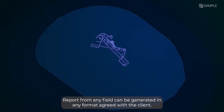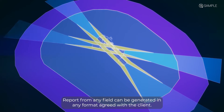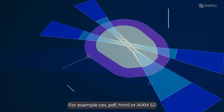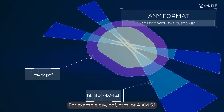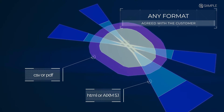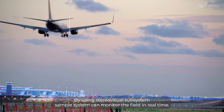A report from any field can be generated in any format agreed with a client. For example, CSV, PDF, HTML, or AIXM 5.1. By using a subsystem, the SAMPLE system can monitor the area in real-time.